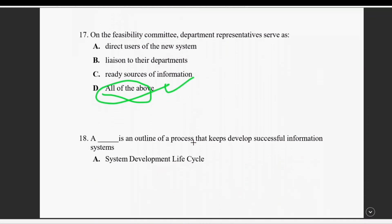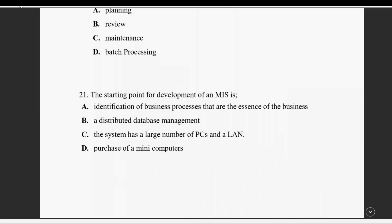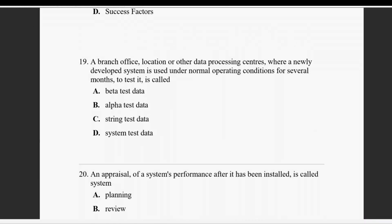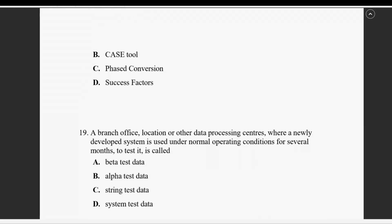Question number eighteen: a dash is an outline of the process that keeps development of a successful information system — the right answer is development life cycle.